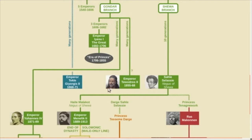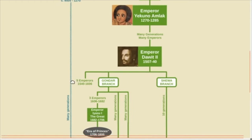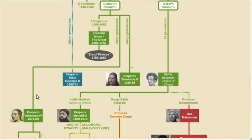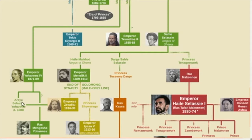After Tewodros, a descendant of the earlier Zagwe dynasty claimed the emperorship for a few years, but then he was defeated by Emperor Yohannes IV, another descendant of the Gondar branch of the Solomonic dynasty. But his son, an appointed heir, died shortly before him. So after Yohannes IV, there was a power struggle. Ras Mengesha Yohannes, previously known as the nephew of the emperor, but after the emperor died, it was claimed that he was actually the emperor's son. However, Menelik II, a descendant of the powerful Shewa branch of the Solomonic dynasty, won the power struggle and became emperor. He is the last confirmed male-line ancestor of the Solomonic dynasty. Early in his reign, the Italians attacked Ethiopia, but the Ethiopians were able to successfully defend themselves.